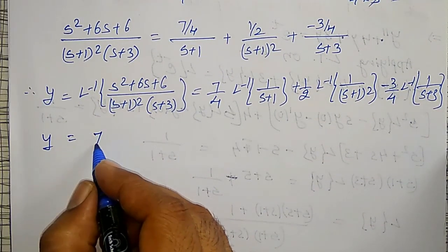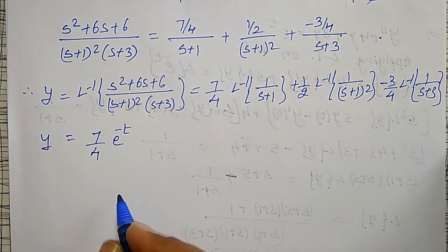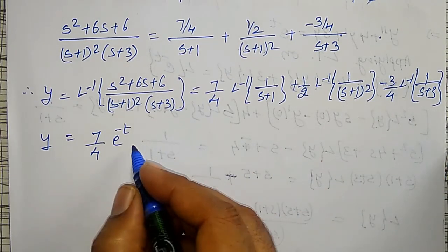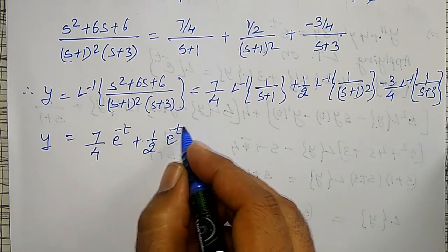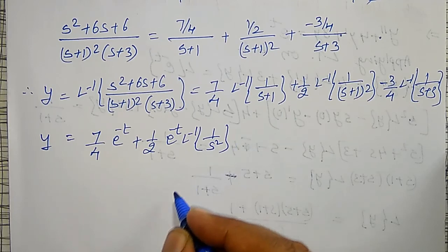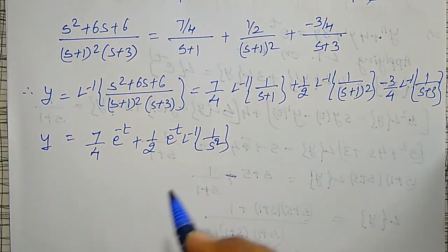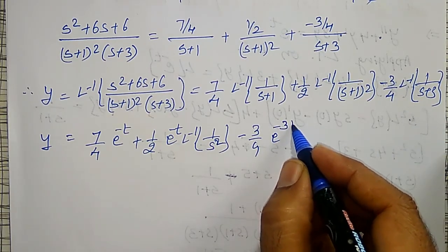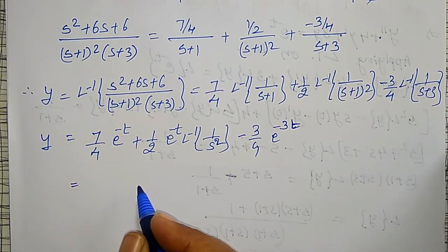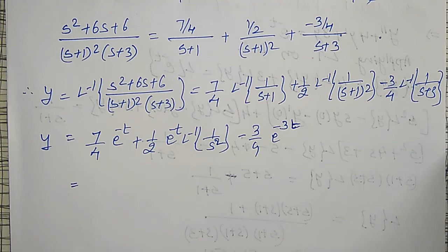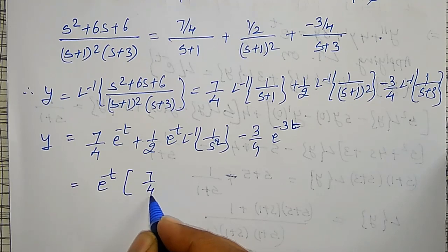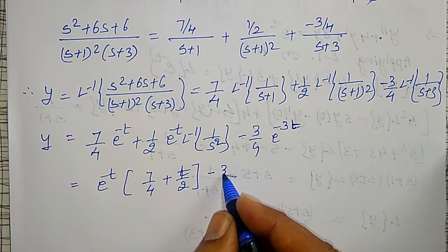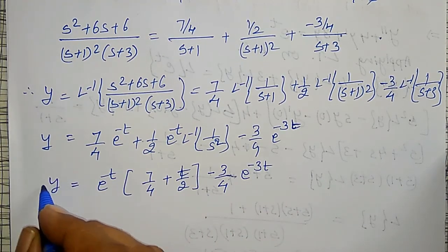The final answer: y equal to 7 by 4 into e to the power minus t. For the second term, since s plus 1 whole squared is there, I apply the shifting property — it becomes 1 by 2 into e to the power minus t, times inverse Laplace Transform of 1 by s squared, which gives t. Minus 3 by 4 into e to the power minus 3t. Taking e to the power minus t common, y equals e to the power minus t into 7 by 4 plus t by 2, minus 3 by 4 into e to the power minus 3t. This is the required answer.